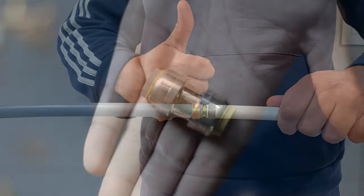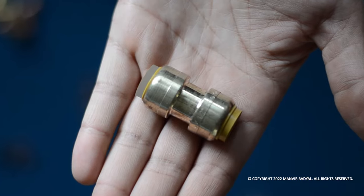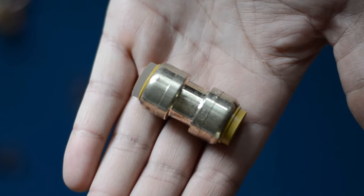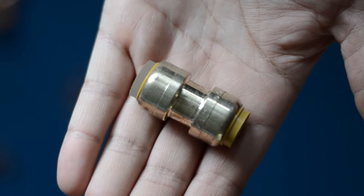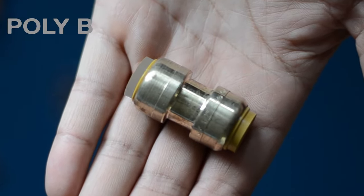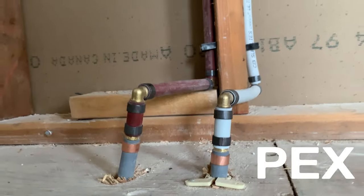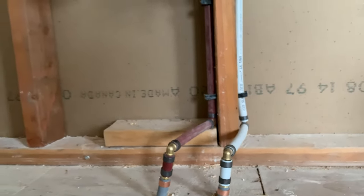There is another alternative to this, which is using a shark bite push fitting. Shark bite makes a special fitting for poly B to pex transition. Poly B pipe will go on grey side of the fitting and pex will go on the other side. Here are some examples from properly done transition.